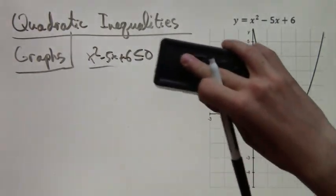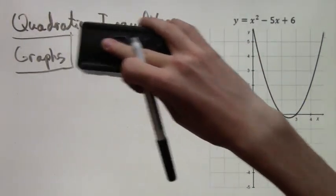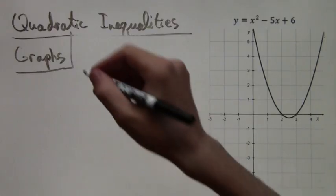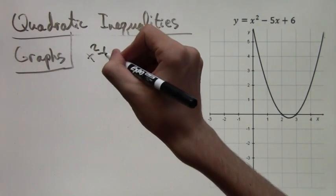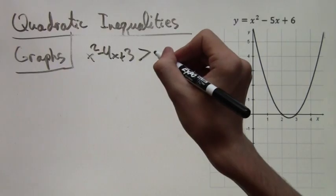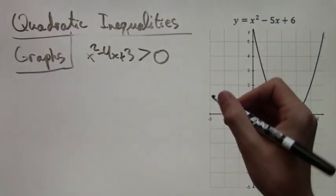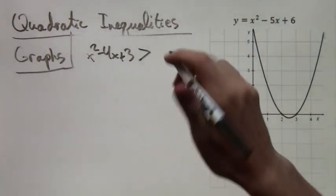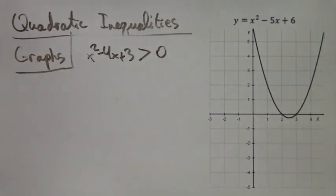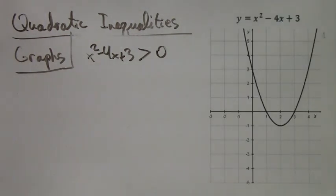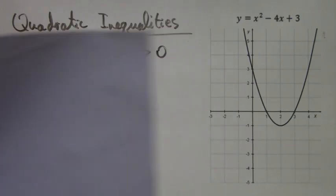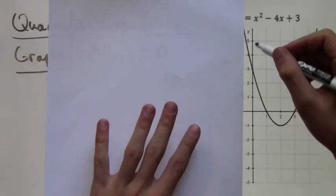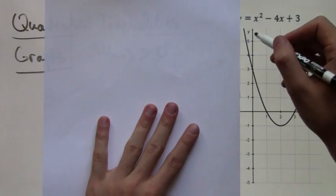So now we're going to try a different example. Let's take the example: x squared minus 4x plus 3 is greater than 0. And again, we're assuming that we're just given the graph. So here it is. Here's the graph of x squared minus 4x plus 3.